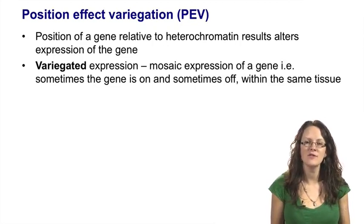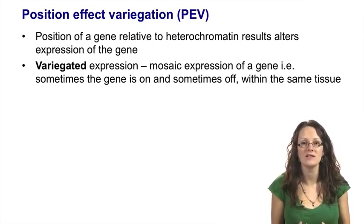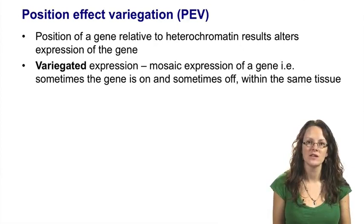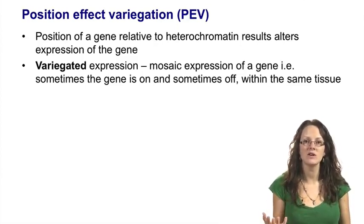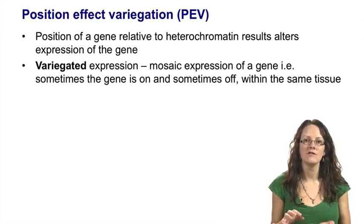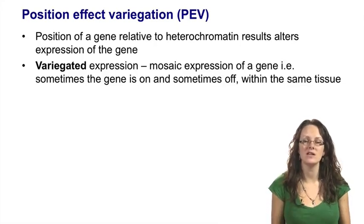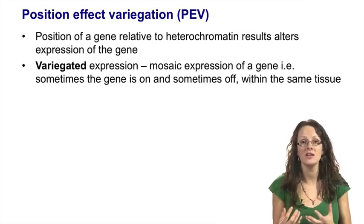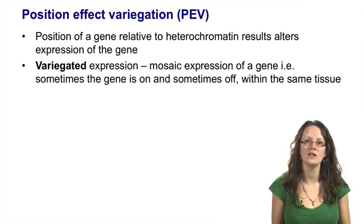Variegated expression, like you might see in variegated ivy or in variegated coat colours in dogs like beagles, involves mosaic expression of a gene in cells of the same tissue. A particular gene can either be on and active or silent within the very same cell type. In the leaf of variegated ivy, the green pigment is expressed in some cells making those parts green, while in other parts the green is turned off producing white sections. Position effect variegation therefore means that genes located near heterochromatin can sometimes be on and sometimes off.